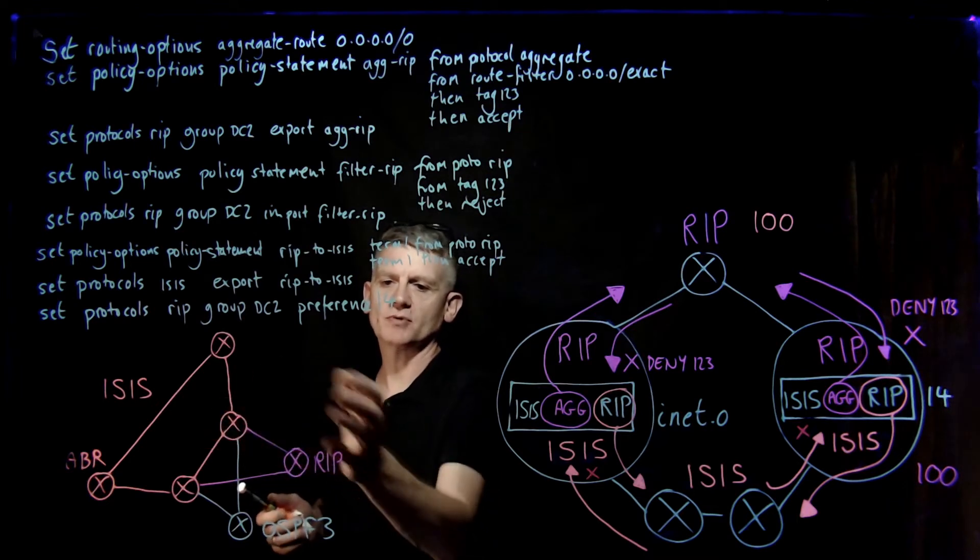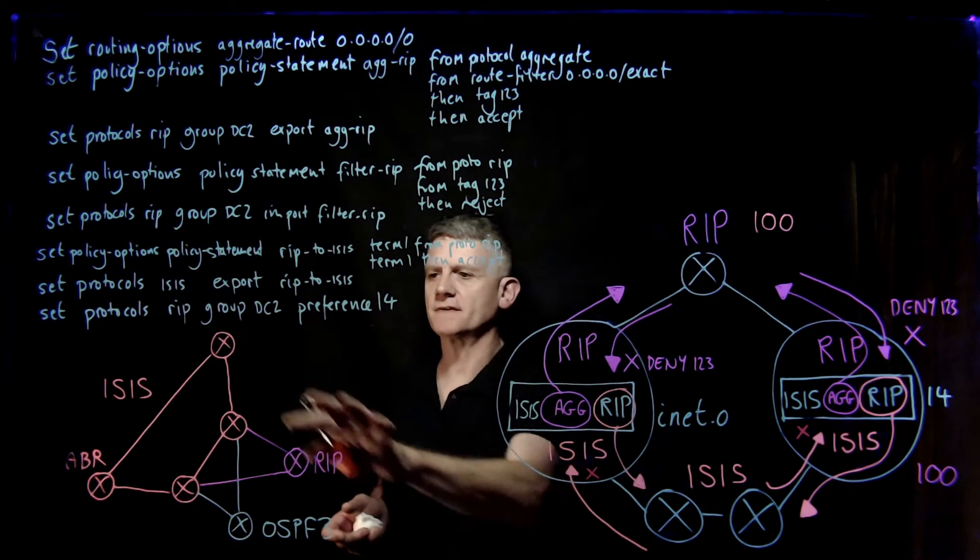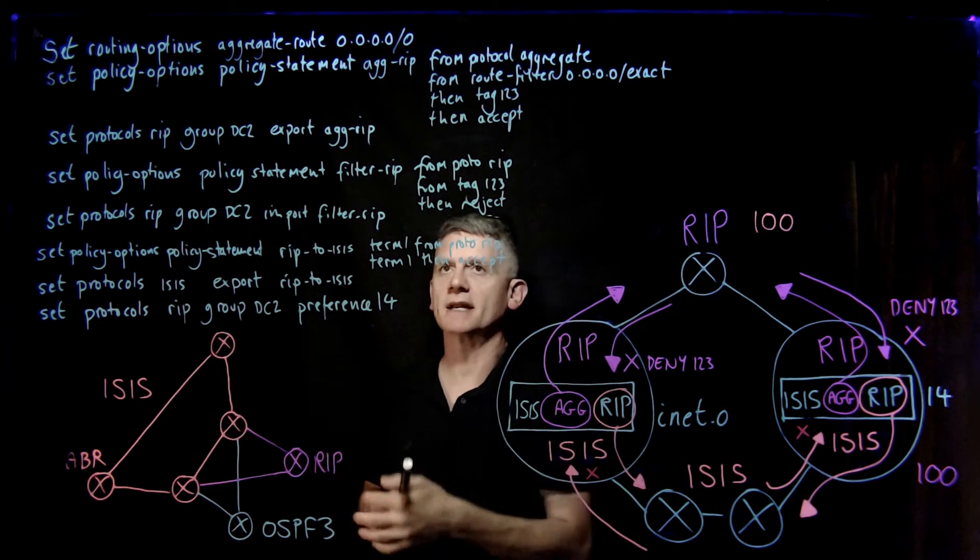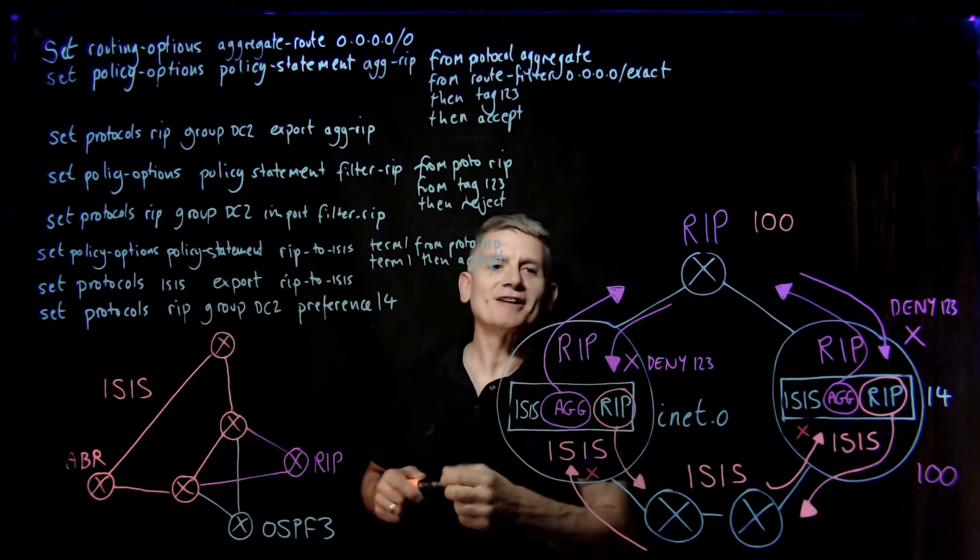Therefore, when we want to export this default route into RIP, because there's really only one way out, this is part of the datacenter that's connected to this MPLS, there's no default route to export. So we're going to create one with an aggregate.